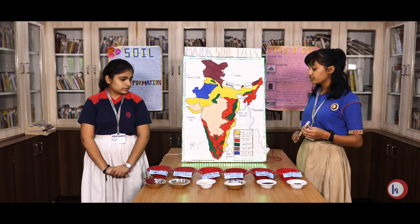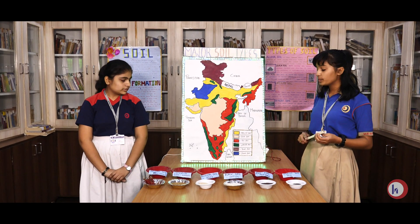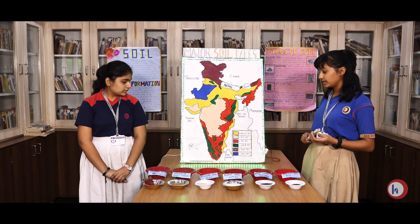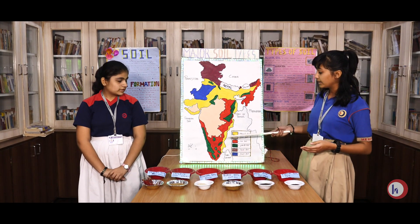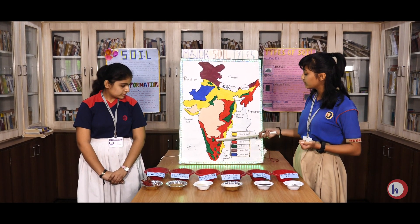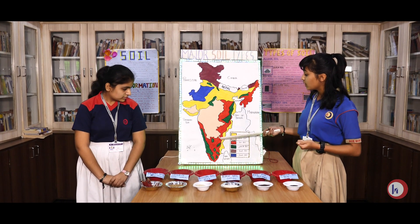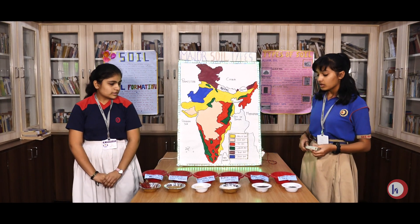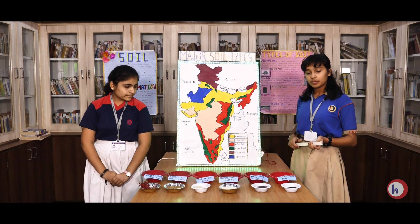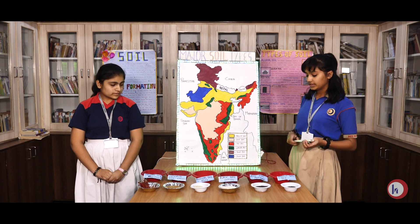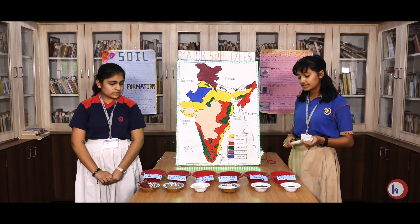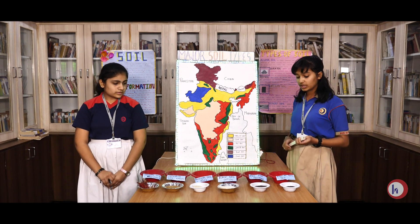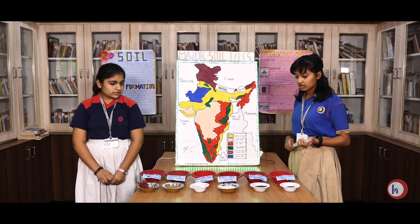Red soil is found in few parts of South India like Karnataka, Andhra Pradesh, etc. Crops like mustard, wheat, barley, etc. can be grown in red soil.